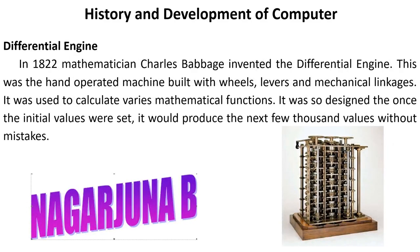In the year 1822, mathematician Charles Babbage invented the differential engine. This was a hand-operated machine built with wheels, levers, and mechanical integers. It was used to calculate various mathematical functions. It was so designed that once the initial values were set, it would produce the next few thousand values without mistakes.